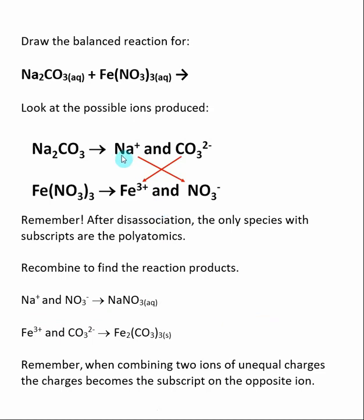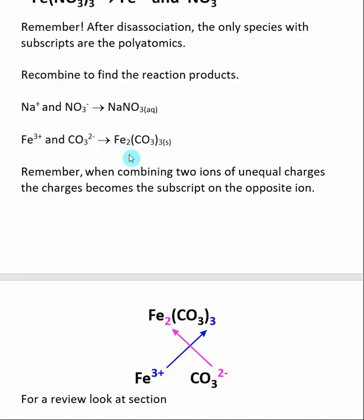Now that we have these ions, they recombine to form the products of our reaction. We take the positive from one and the negative from the other. Na+ and NO3− recombine — since they have the same charge magnitude, they come together in a one-to-one mole ratio to make sodium nitrate. However, Fe3+ and CO3 2− have different charge magnitudes, so we must combine them in a specific ratio such that the product has no overall charge. The product is iron(III) carbonate. A simple trick: when combining ions of unequal charges, the charge on each ion becomes the subscript on the opposite ion.